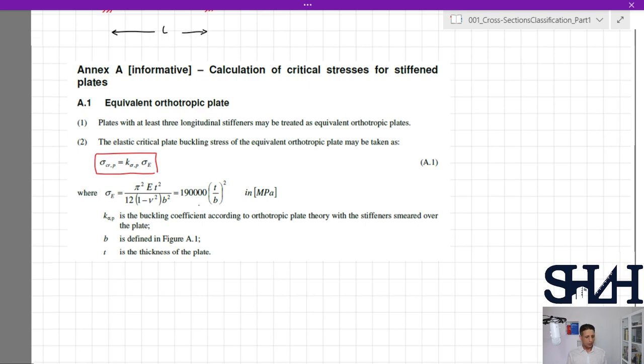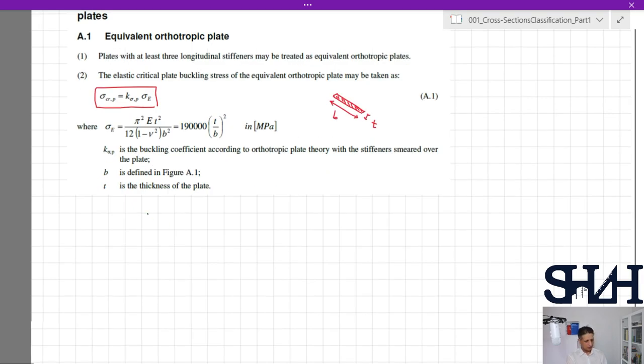Sigma e is always written as the given equation: 190,000 times t over b squared. It's b and t, and k sigma p is determined according to the boundary condition on both ends of this plate. Now assume that we have a column which is a hollow section and one of these edges has the width of b and thickness of t.